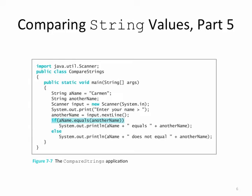If that is true, it will print out the contents of aName, Carmen, equals, and then the contents of anotherName. If that is false, it will print out Carmen does not equal, and then whatever the other name was that the user entered.